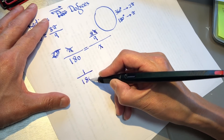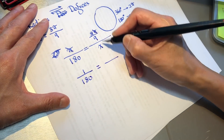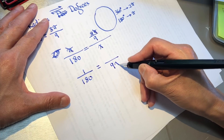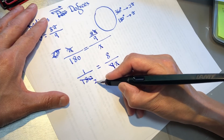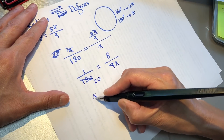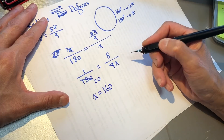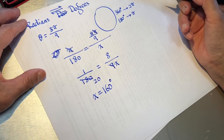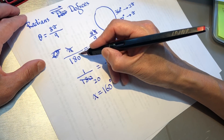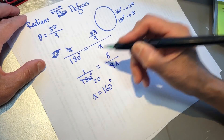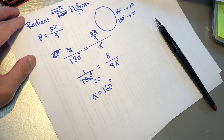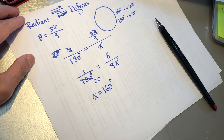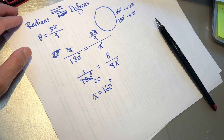So 1 over 180, and this 9 can go down: 9x equals 8 times 20, so x equals 160 degrees. You can write the degree symbol here — it's better to do it that way. So it's 160 degrees. Let's check the answer — yes, we are right.